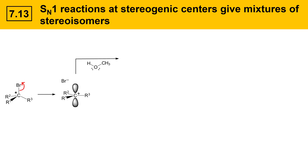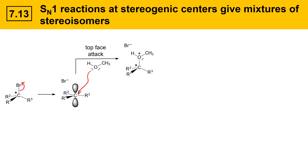Let's consider what top face attack would look like first. The nucleophile attacks the carbocation from the top face, and when it does, R3, R2, and R1 are all going to bend down towards the lower part of the screen to try to get out of the way of the approaching nucleophile and to reestablish the tetrahedral structure of the atom with four different groups. Now we have four groups again, we have a stereogenic center again, and it is formed with a particular configuration.